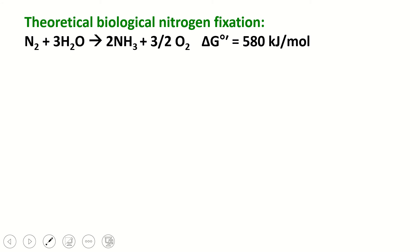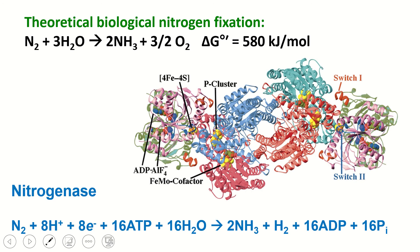Back to theoretical and biological nitrogen fixation — as we noted, this is very thermodynamically unfavorable, so we're going to need some sort of energy input. And of course, our energy input is ATP. The enzyme that catalyzes the reduction of dinitrogen to ammonia biologically is called nitrogenase. Here is the structure for nitrogenase that we'll discuss more shortly.